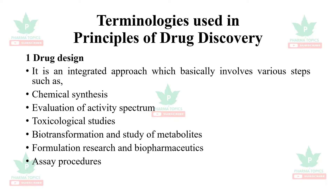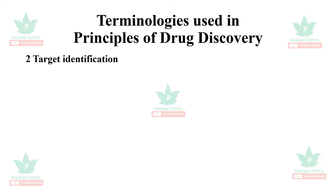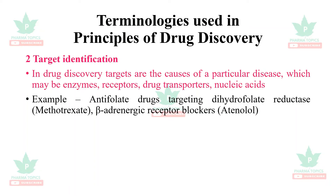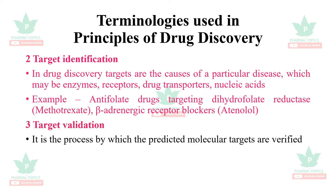Next is: what is target identification in drug discovery? Targets are the causes of the particular disease, which may be enzymes, receptors, drug transporters, or nucleic acids. Example: anti-folate drugs targeting dihydrofolate reductase — example is methotrexate; beta-adrenergic receptor blockers — example is atenolol.